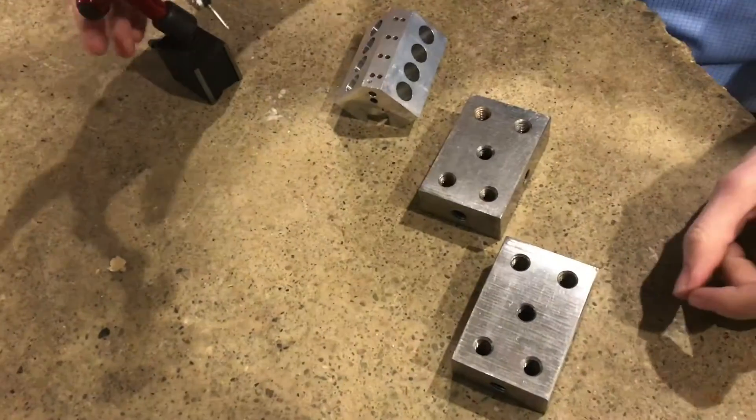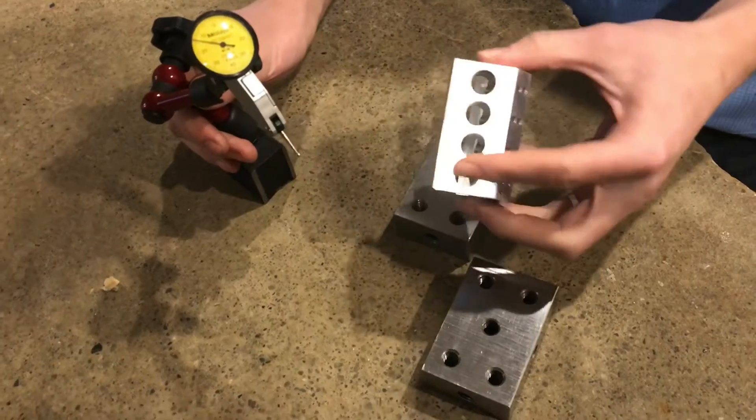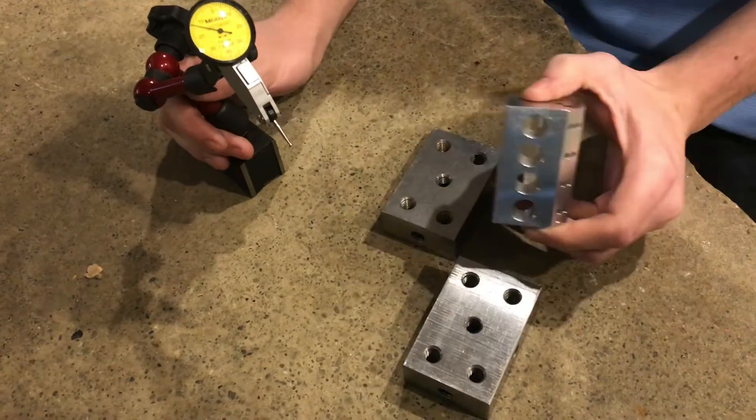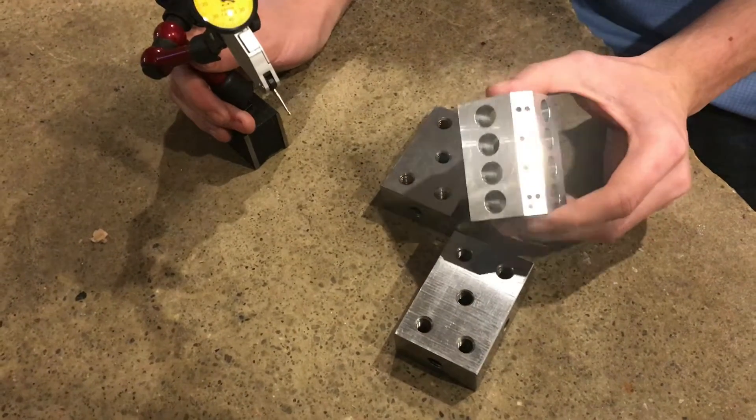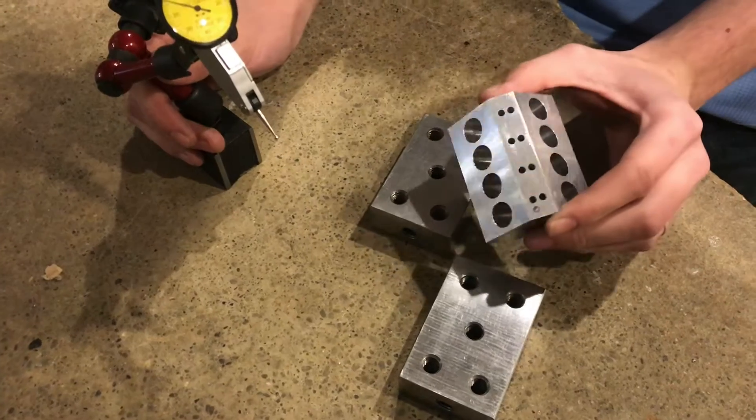Most of the time, if you're using a dial indicator like this to measure a part for perpendicularity and parallelism, you would need a really expensive surface plate that is precision ground and lapped perfectly flat.